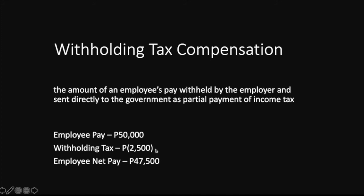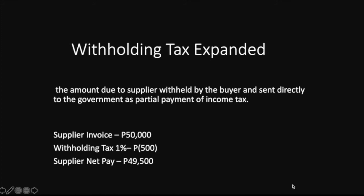Withholding tax expanded, on the other hand, is the amount due to a supplier withheld by the buyer and sent directly to the government as partial payment of income tax. For example, if a supplier issues an invoice for 50,000, the withholding tax for goods is normally 1%, so you withhold 500 and issue a payment of 49,500 to the supplier. The 500 is then remitted to the government or BIR in the next accounting period.